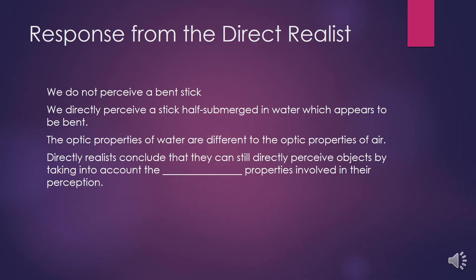What could a direct realist say in response? They could say that we don't perceive a bent stick — we directly perceive a stick that's half submerged in water and it appears to be bent. It's not a bent stick; it appears to be bent. They would explain that the optic properties of water are very different to the optic properties of air, with these properties being out there mind-independently. Direct realists conclude they can still perceive objects by taking into account relational properties, maintaining that objects exist mind-independently and possess both intrinsic and relational properties.